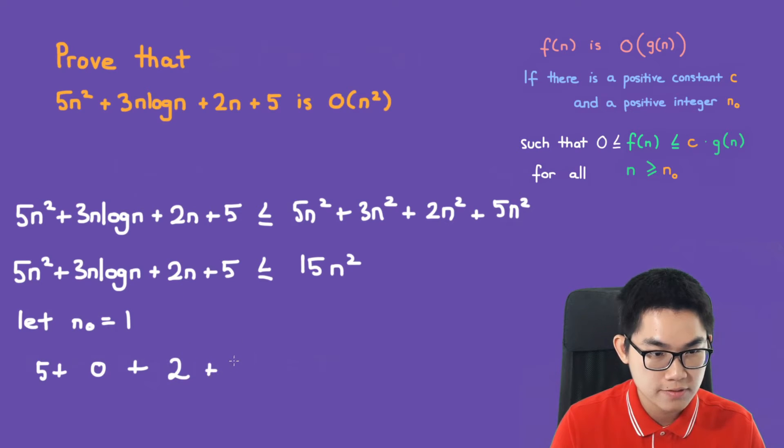therefore this is just 0 plus 2 times 1, which is 2 plus 5. And is this less than 15 times 1? Right? So we have 12, and that is indeed less than or equal to 15.